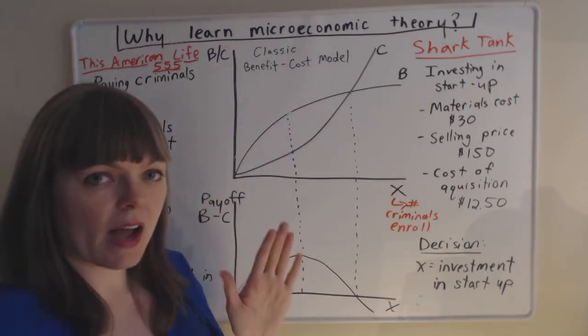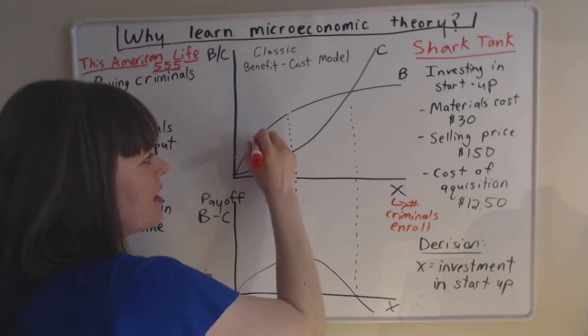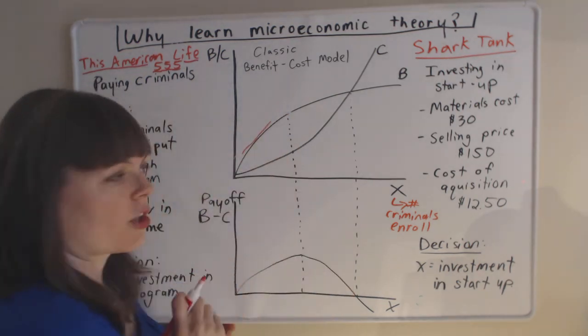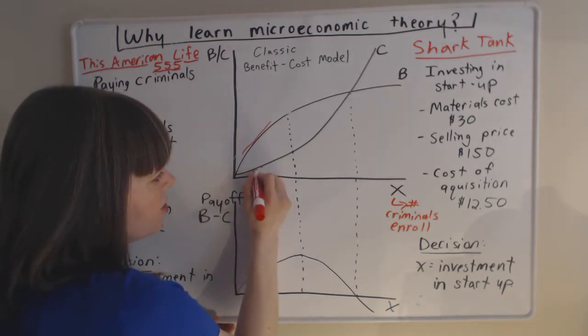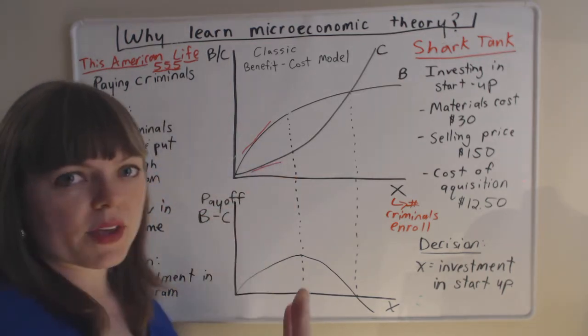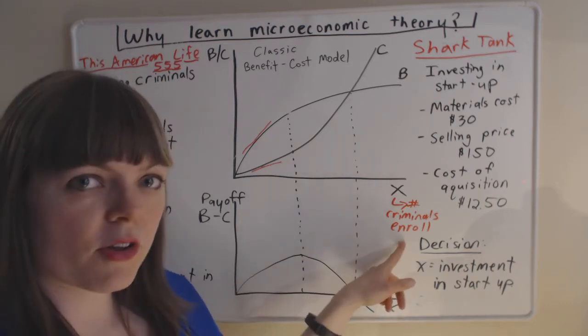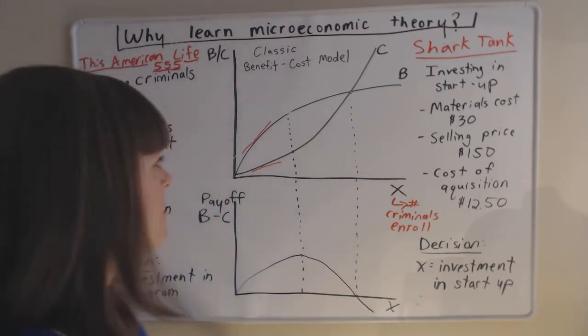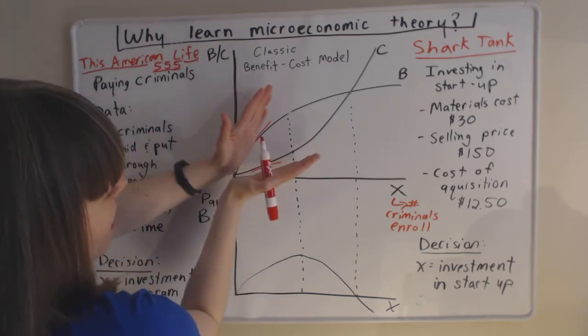The fact that benefit outweighs cost means that the marginal benefit, which is given by the slope, is greater than the marginal cost. Certainly we believe that whatever money we invested per criminal was definitely worth the 80% reduction in violent crimes. So we know these two outweigh each other.